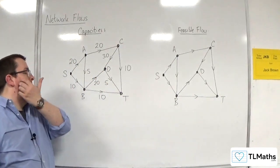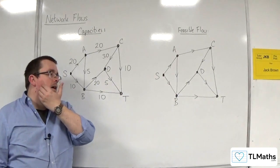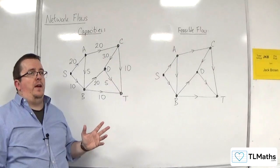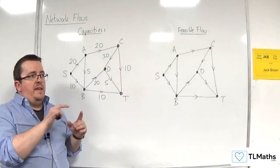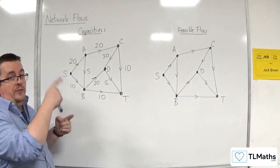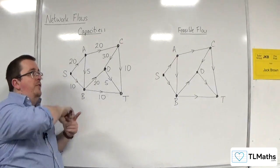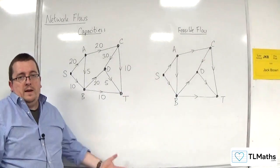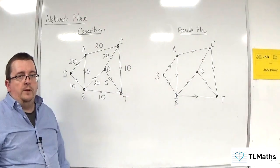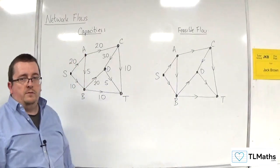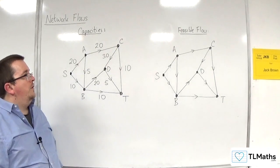Sometimes you might see different exam boards and different textbooks might have the capacities circled and the feasible flow shown just written on the edges, not within the circles. There are different ways of doing this. I've opted for just showing it as a different network.